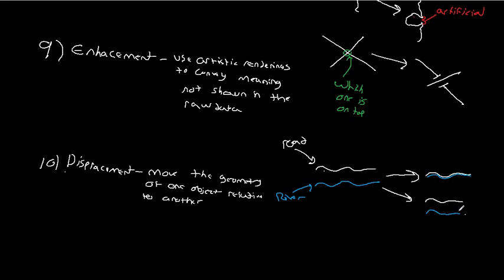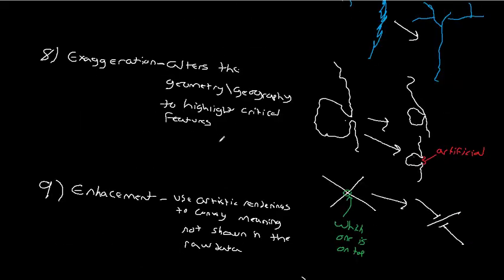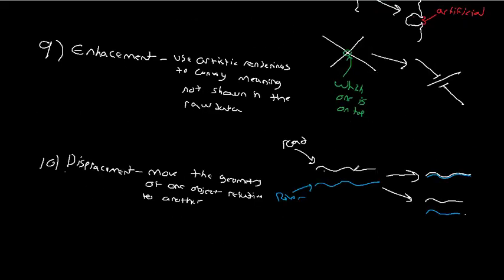And what makes this different from exaggeration is that exaggeration is a critical feature of a single object. In this case, we've altered the shoreline to make this inlet be visible. Whereas displacement, we're dealing with the relationship between two objects, between two different features. Hopefully that makes sense.